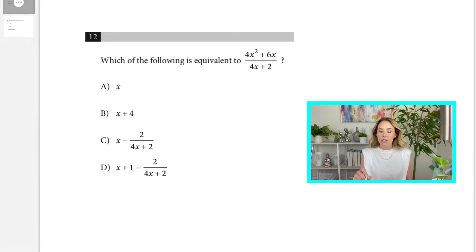So, looking at this number 12, you can see that there's variables in the problem and in the answer choices. Now, instead of using synthetic division or long division, all you need to do is just make it tangible by picking a number for x.